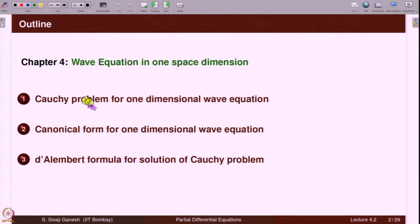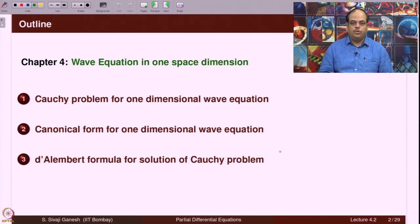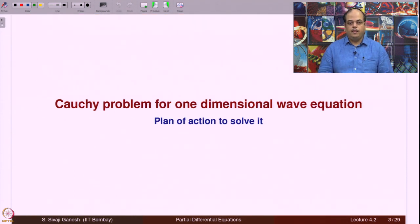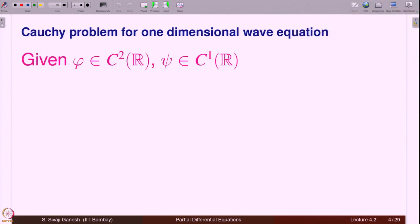The solution is known as D'Alembert's formula. The outline is that we introduce the Cauchy problem for the one-dimensional wave equation, and then we look at the canonical form for the one-dimensional wave equation. Using that, we obtain a solution which is known as D'Alembert's formula for the Cauchy problem. We highlight the key points.